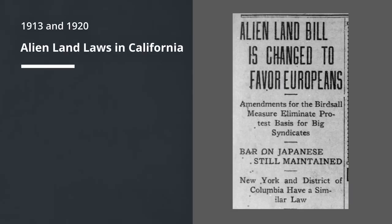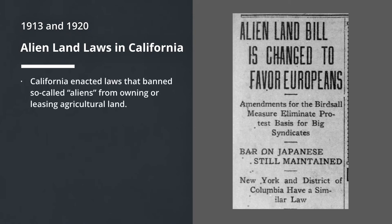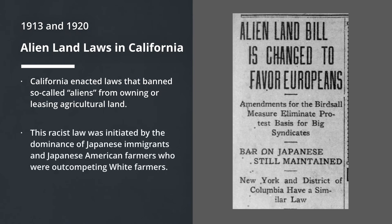In 1913, California passed alien land laws — also extended in 1920 — to ban so-called aliens from owning and leasing agricultural land. This racist law was initiated by the dominance of Japanese immigrants and Japanese American farmers who were out-competing white farmers. While Japanese were working as groups and using their networks, whites were working as individuals looking out for their self-interest. Therefore, the Japanese had a competitive edge in California agriculture, and white farmers petitioned the state government to pass a law prohibiting Japanese immigrants and Japanese Americans from owning these lands, and so those lands were taken away from them.